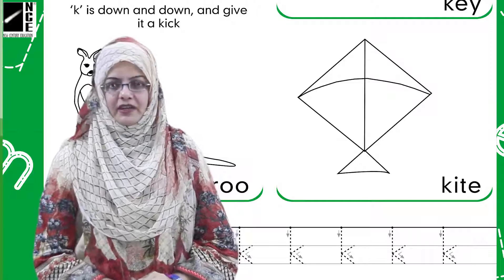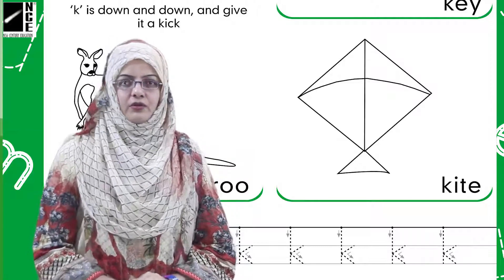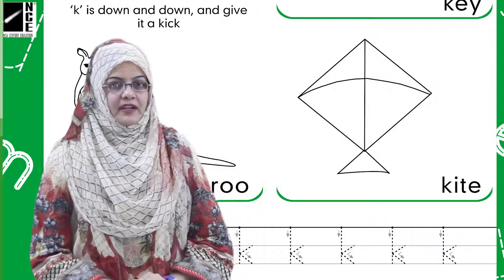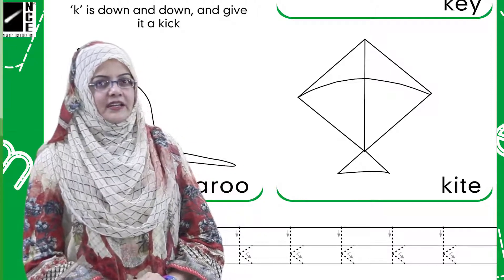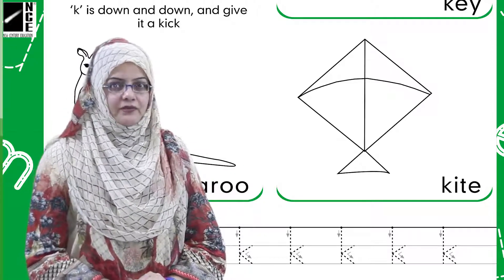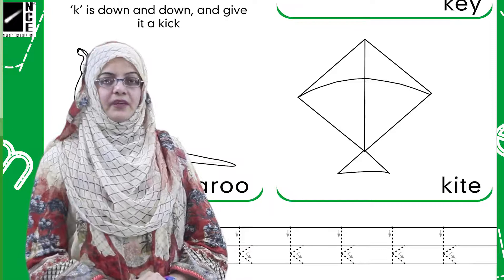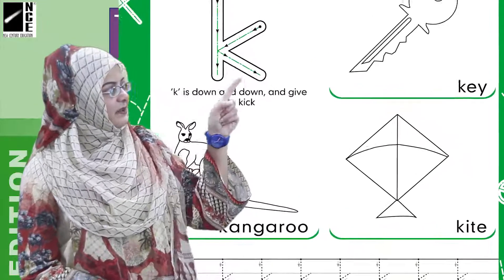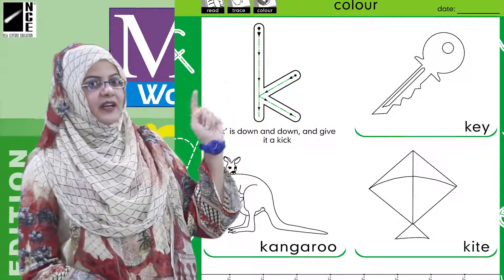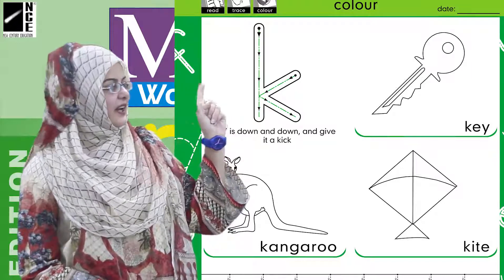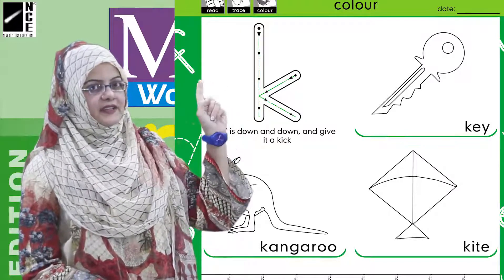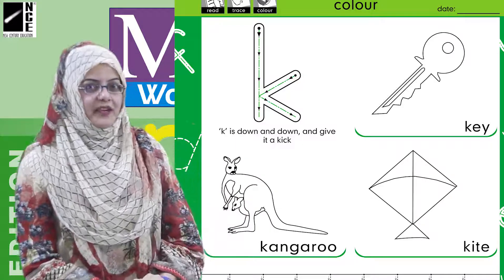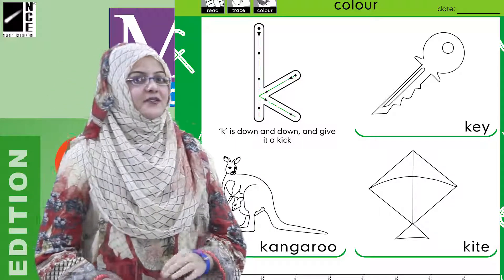What are we going to do? In these pictures we have some feelings — we have a beginning sound. They are the same — the same as the key in the beginning, as the kangaroo, and as the kite.